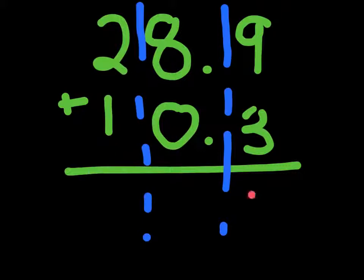So, we know that 9 plus 3 is 12. So, we would write a 2 here. Then we would carry the 1 over. Then we would add everything in the middle column. 1 plus 8 plus 0. And 1 plus 8 plus 0 is just 9.